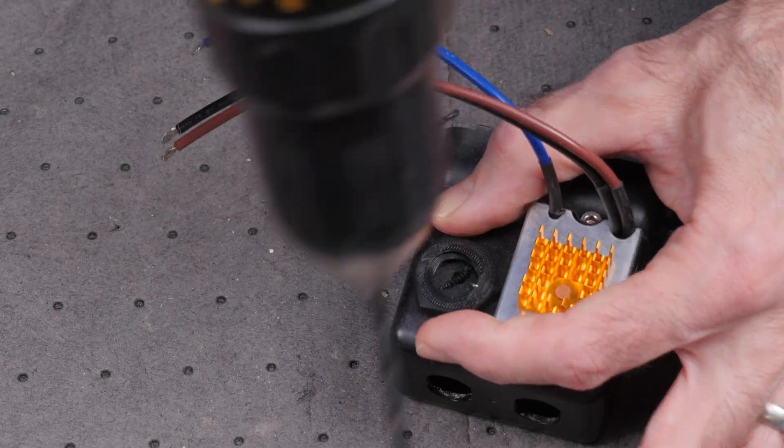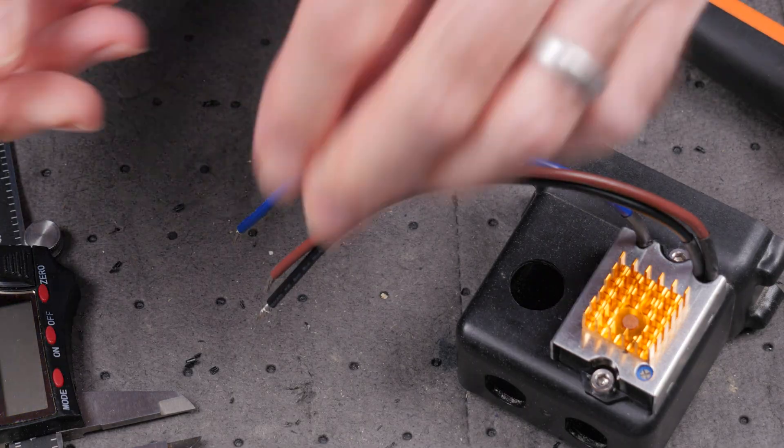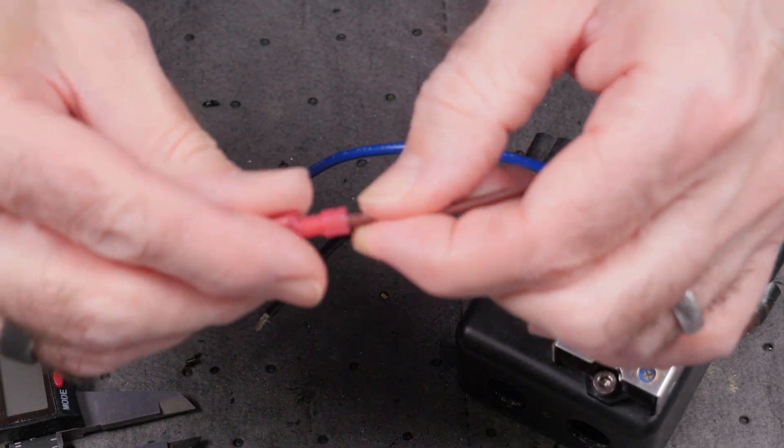Next, I drilled the pilot hole and then used a step bit to enlarge the hole in order to accept the wire bushings I made in Fusion and 3D printed. More on that in a minute.